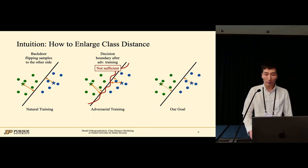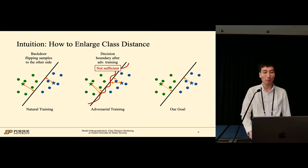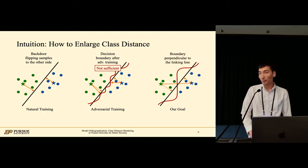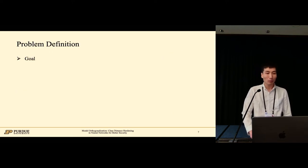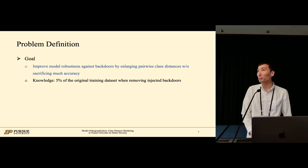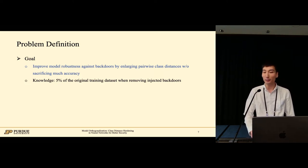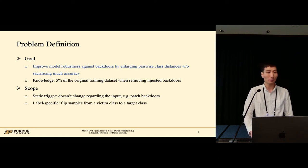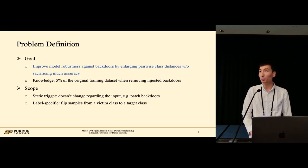Now, let's see our goal. This is the original boundary and distances. From the math point of view, suppose there is a line linking the two class centers. The largest distance can be achieved when the boundary is perpendicular to the line here. Our goal is to improve the model robustness against backdoor attacks by enlarged pairwise class distances while maintaining normal functionalities. When removing injected backdoors in poisoned models, we assume only 5% of the training data are available. We consider static triggers that do not change regarding the input, such as patched backdoors, that are label specific and aim to flip predictions from a victim class to a target class. Both injected backdoors and natural backdoors are harmful. We handle both cases.